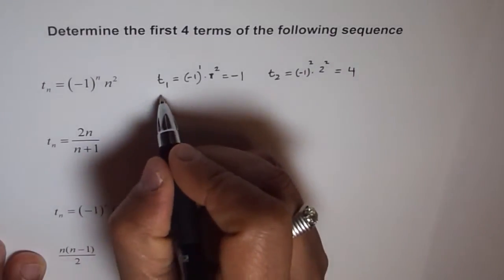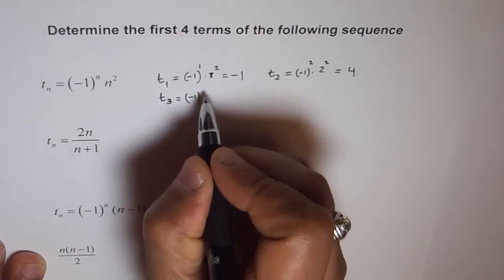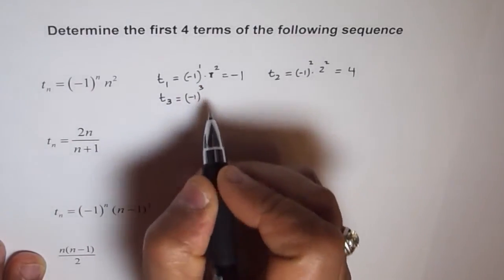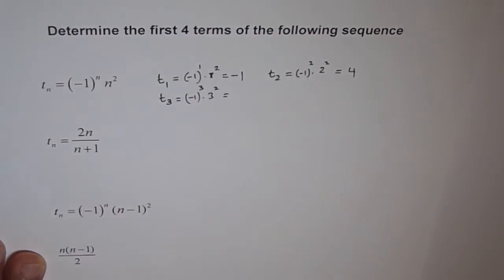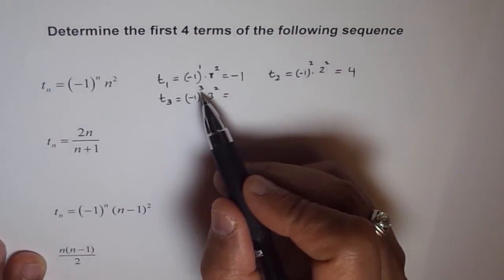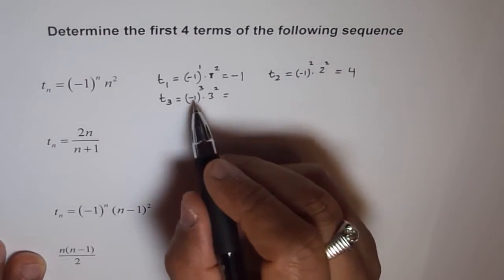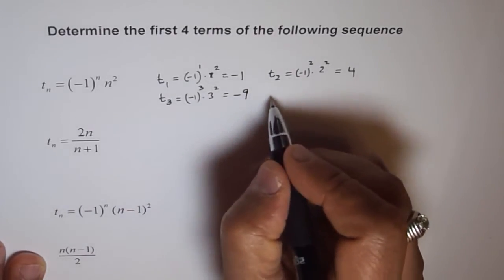How about t3? So, t3 equals to minus 1 to the power of 3 times 3 square. Minus 1 cube, whenever there is odd number in the exponent, then you get minus. So, it's minus and 3 square is 9, so we get minus 9.